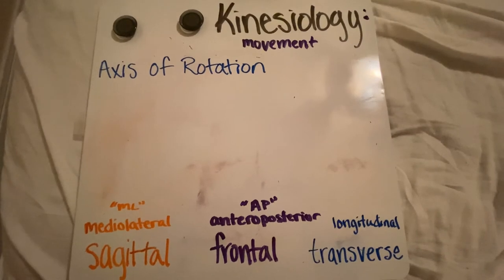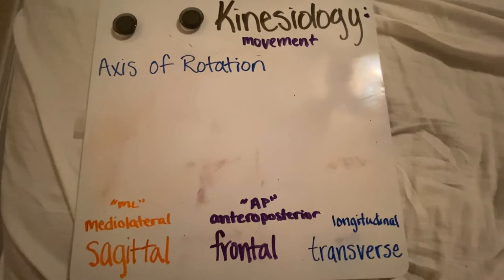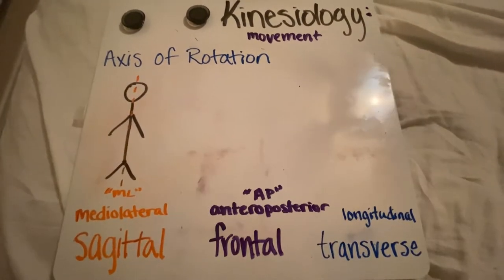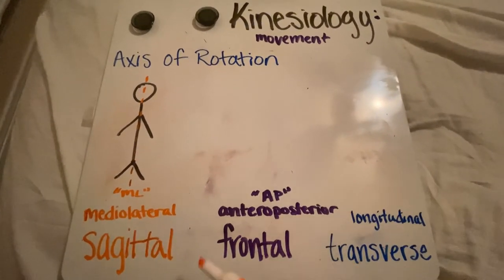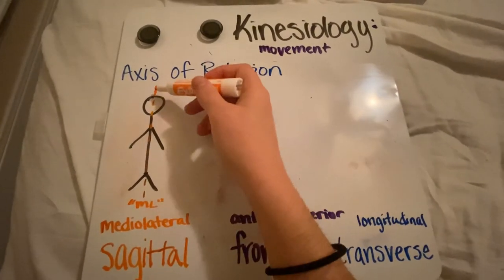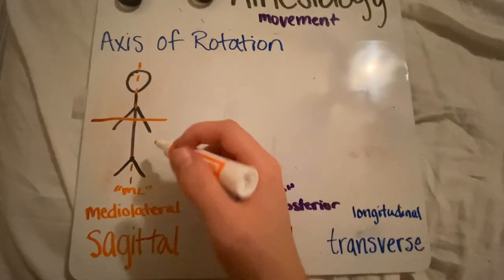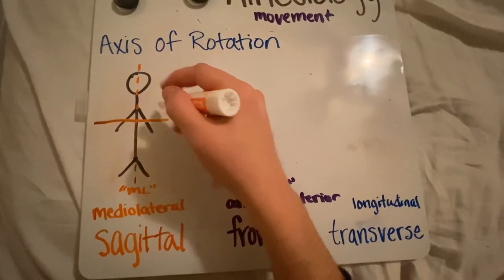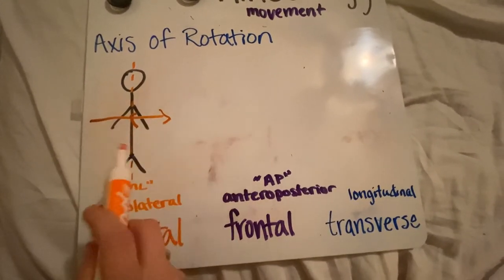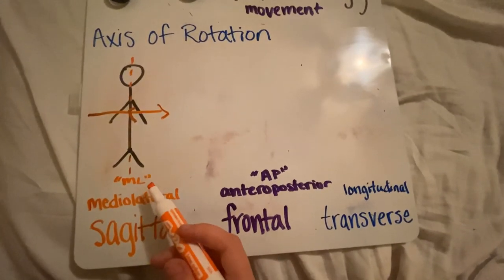When we talk about planes of motion, there's also an axis of rotation, which is always perpendicular to the plane of motion. In the sagittal plane, you would have the medial-lateral axis of rotation. Because the sagittal plane runs this way, the perpendicular line comes the other way — towards lateral and towards medial. This is called the medial-lateral axis, or the ML axis.